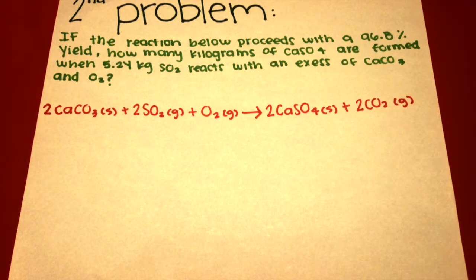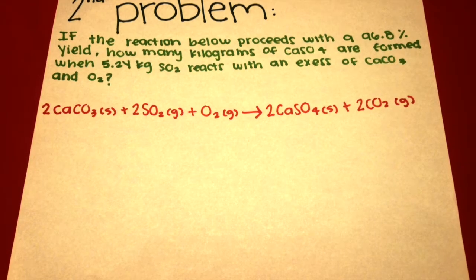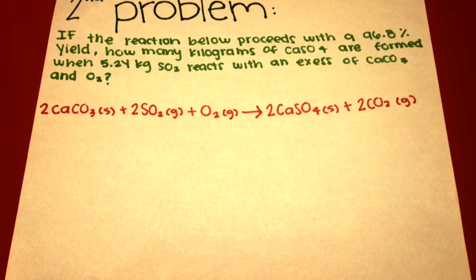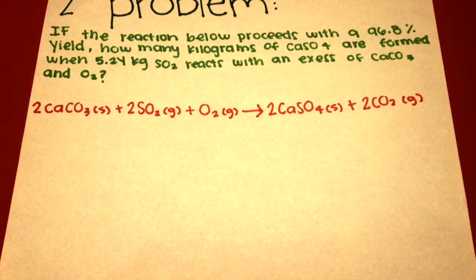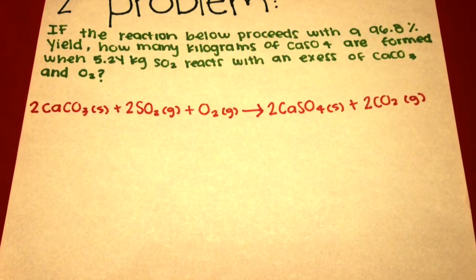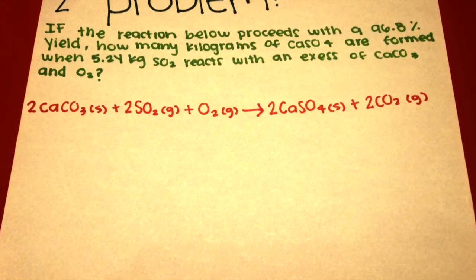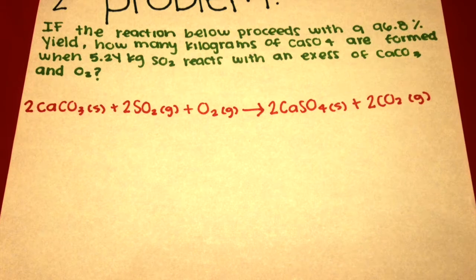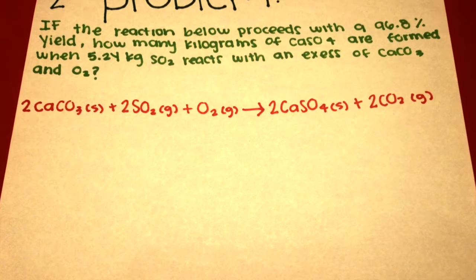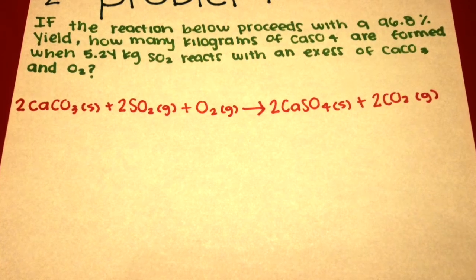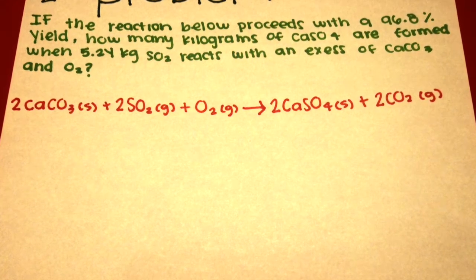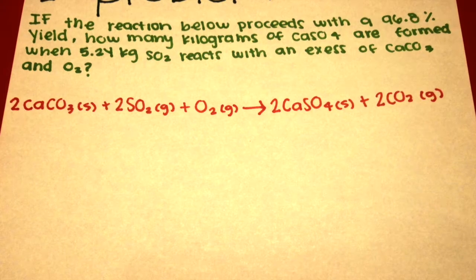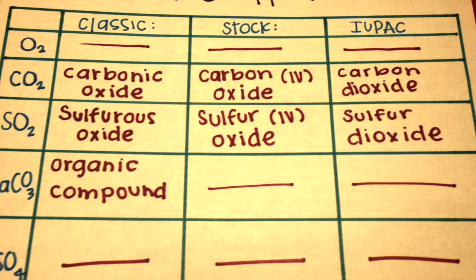Now, the second problem. If the reaction below proceeds with a 96.8% yield, how many kilograms of calcium sulfate are formed when 5.24 kilograms of sulfurous oxide reacts with an excess of calcium carbonate and oxygen?